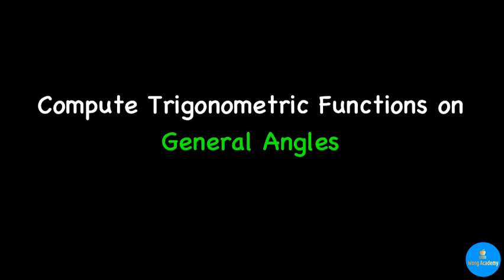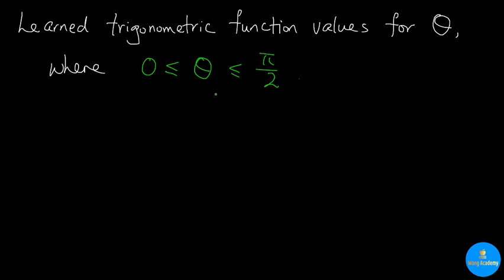In this video, I'm going to talk about computing trigonometric functions on general angles. From the last video, we learned how to find the trigonometric function values for angles in a right-angled triangle, which means the angle theta is between 0 and pi over 2. In this video, we are going to talk about how to find trigonometric function values for angles outside this interval.